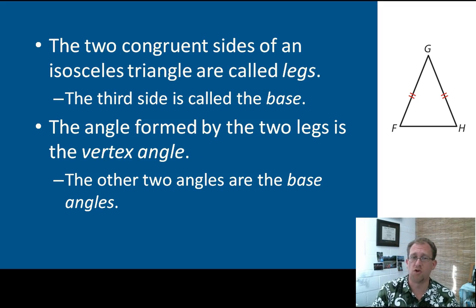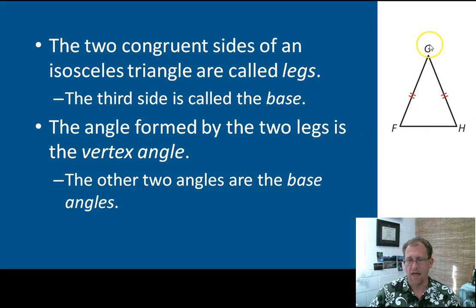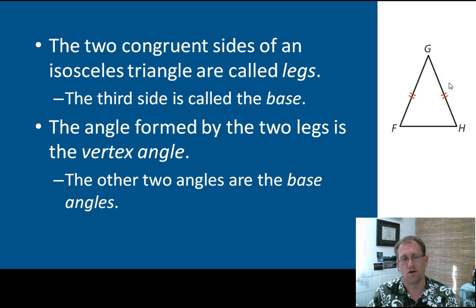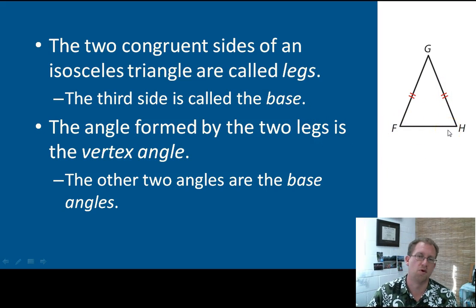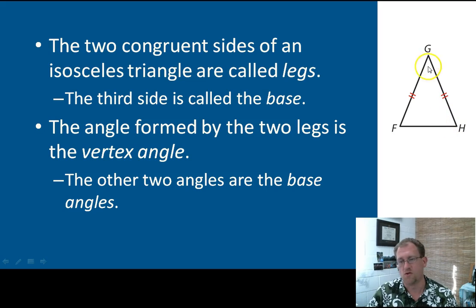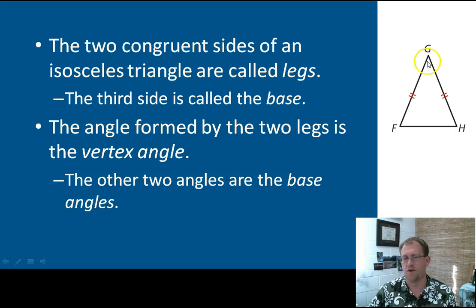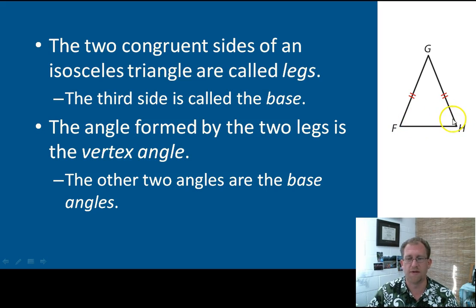If you have an isosceles triangle, there's some terminology you'll want to use. In isosceles triangle GFH, where GF is congruent to GH, those two congruent sides are called the legs of the isosceles triangle. The third side that is not congruent is called the base. The angle at the top — where the two equal legs meet — is called the vertex angle. The other two angles near the base are called base angles. So that is isosceles triangle terminology.